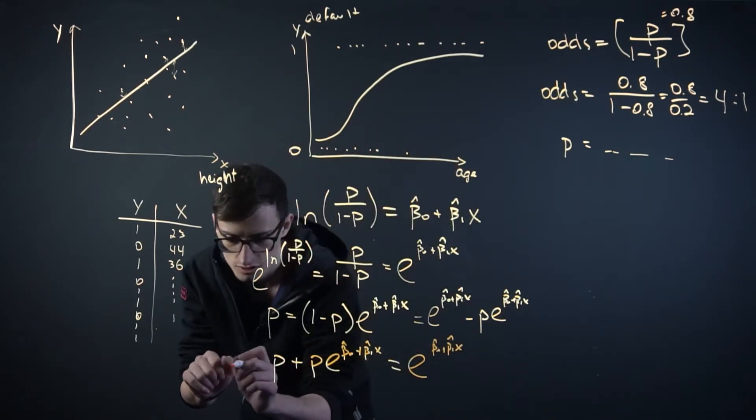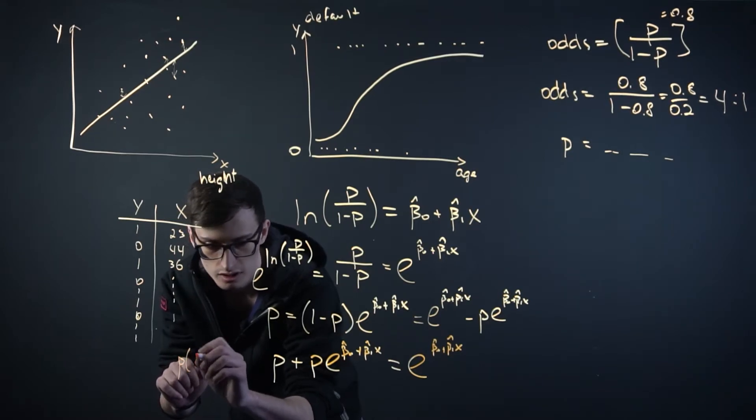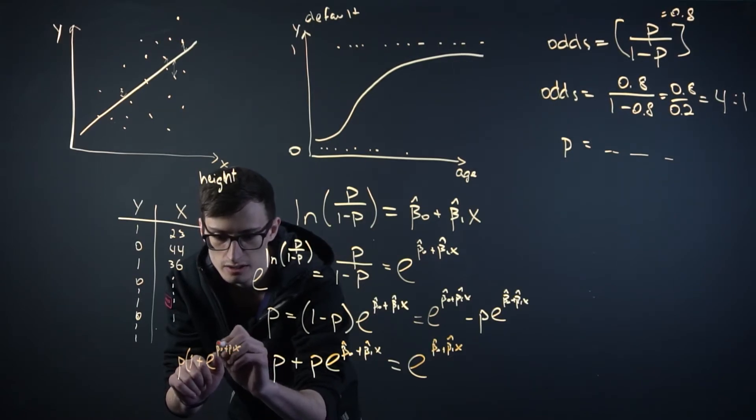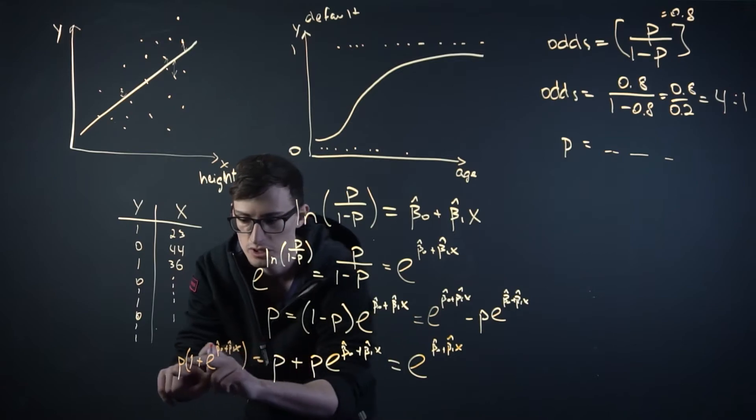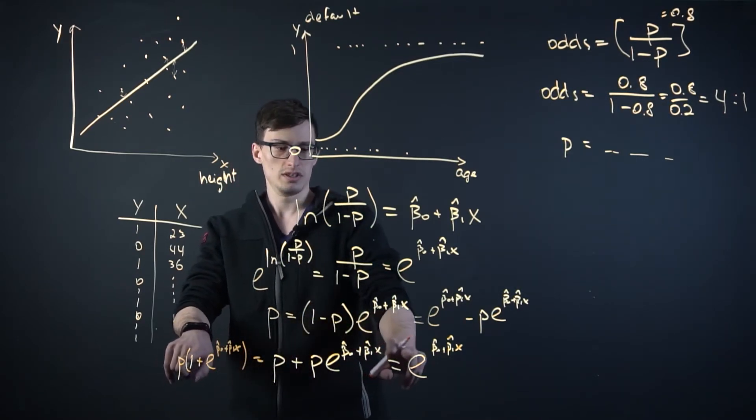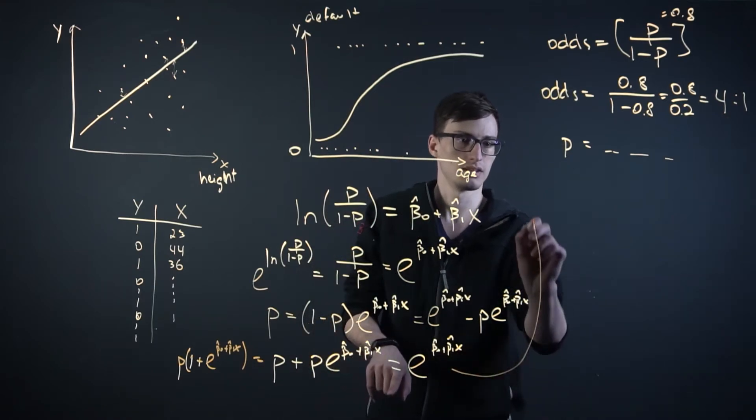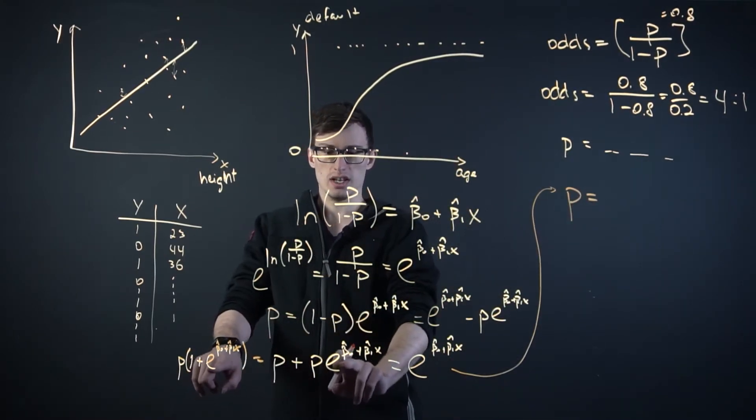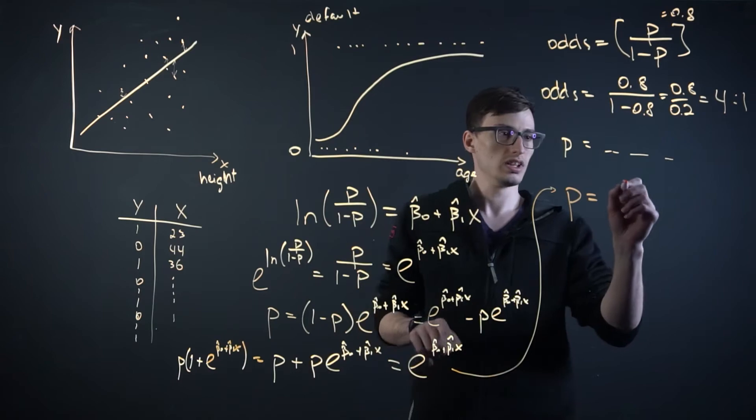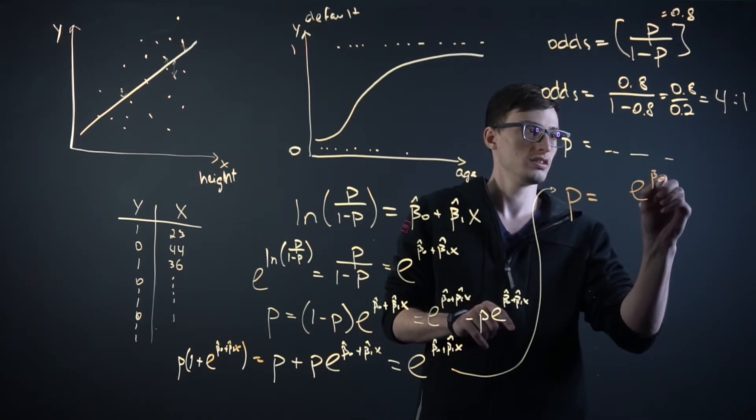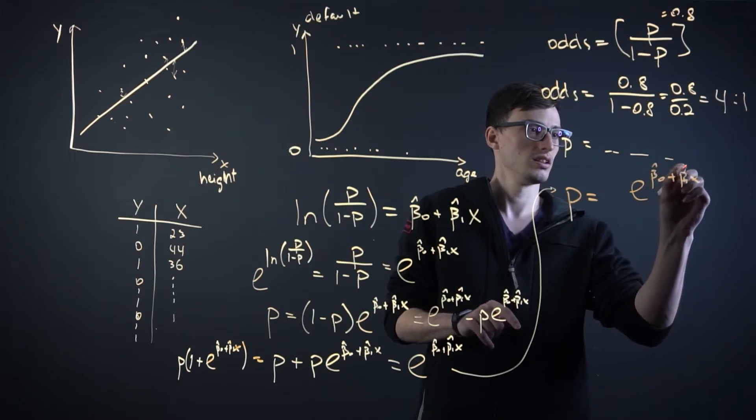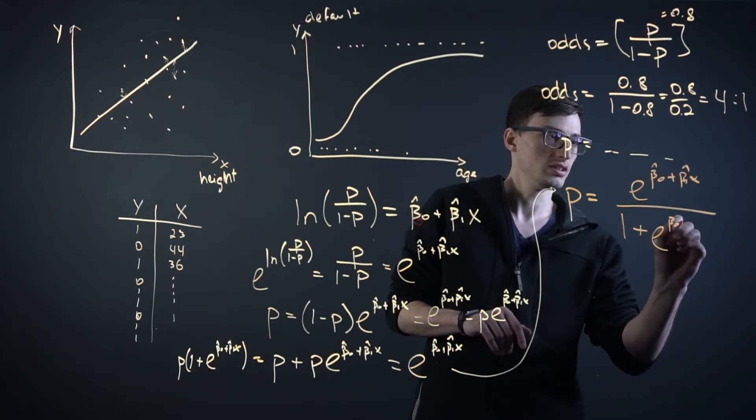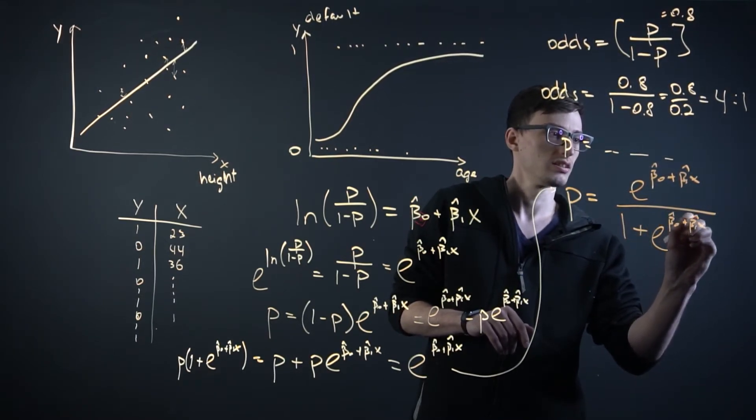Where can we do this? Well, I'll just write it over here. It would be p times 1 plus e to the beta 0 plus beta 1 x. Does that make sense? We just take the p out and put it over here. And then, now that you can see we have the p by itself, and we can rewrite this over here, just like we wanted, p equals. And then, we divide both sides by this. So, what we're left with is e to the beta 0 plus beta 1 x divided by 1 plus e to the beta 0 plus beta 1 x.